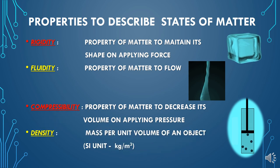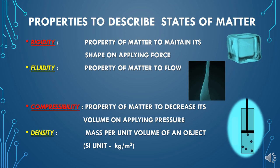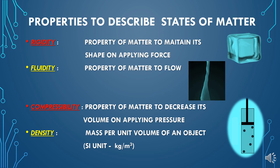The fourth property is density. Density is a specific property of any substance defined as mass per unit volume of an object. For a specific volume, the mass of an object is its density. The SI unit of density, based on its formula of mass over volume, is kilogram per meter cube.